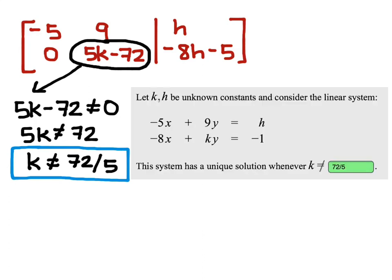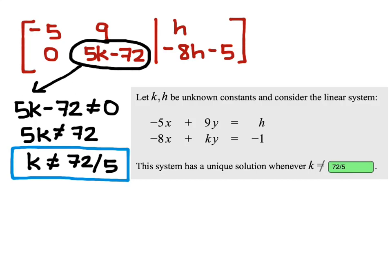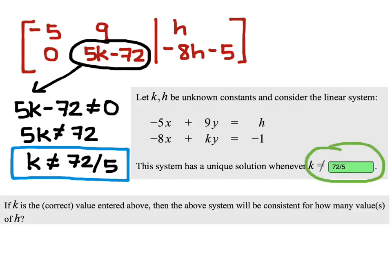This is the solution to the first part of the problem, k is not equal to 72 over 5. Now, the second part of the problem wants to know if k is the correct value entered above, then the above system will be consistent for how many values of h.